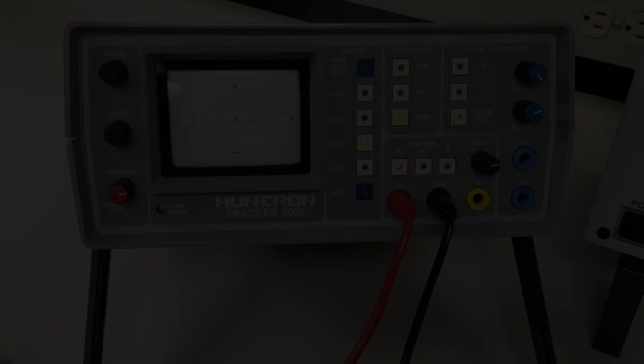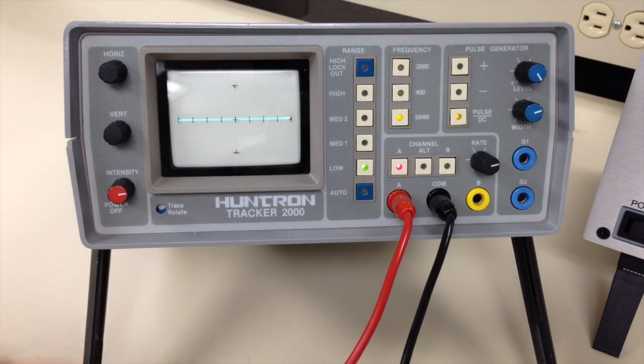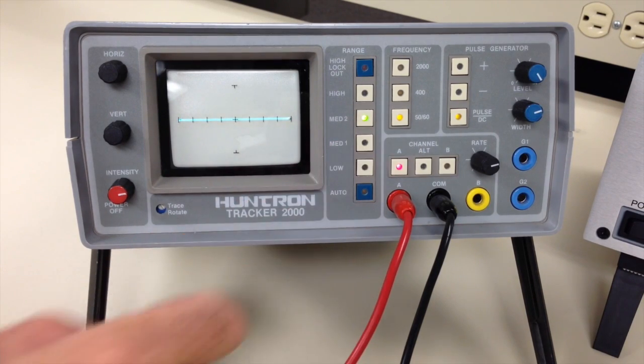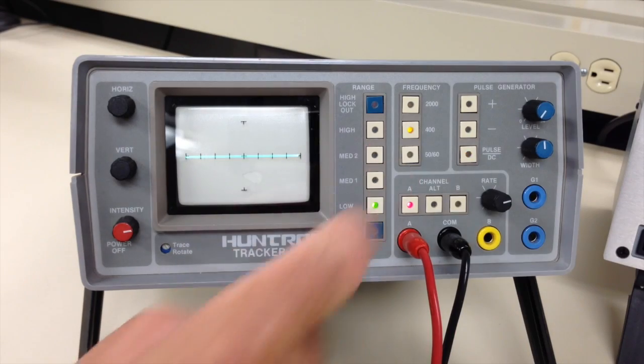With Tracker 2000, the idea was to keep it simple, hence the low, medium 1, medium 2, and high push button range settings. The frequency was variable with three independent settings.